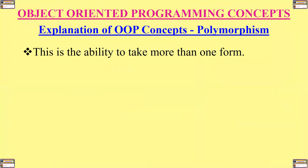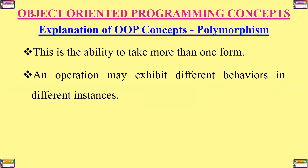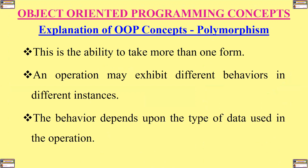What is polymorphism? Polymorphism is the ability to take more than one form. An operation may exhibit different behaviors in different instances. The behavior depends upon the type of data used in the operation.